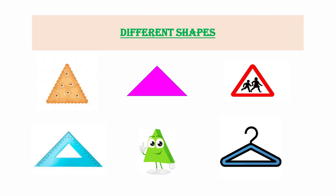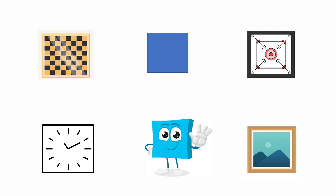What do we call a closed shape which has three sides? A triangle, isn't it! You can see several triangle-shaped objects here: a cracker, a geometry box, a set square, a road sign, and a hanger. Can you see the triangle shape as a common feature in all of these?